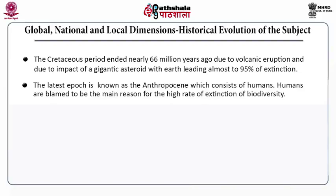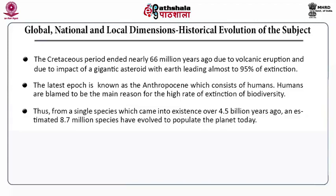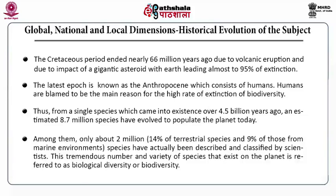The latest epoch is known as the Anthropocene. This epoch consists of humans. Humans are blamed to be the main reason for the extinction of biodiversity. From a single species — bacteria — which came into existence over 4.5 billion years ago, an estimated 8.7 million species have evolved and are populating the planet today. Among them, only about 2 million, that is 14% of the terrestrial species and 9% of those from the marine environment, have actually been described and classified by scientists. This tremendous number and variety of species that exist on our planet is referred to as biological diversity or biodiversity.